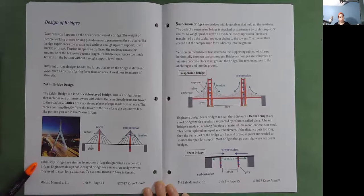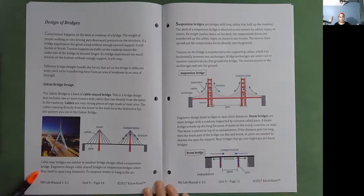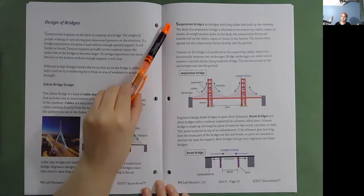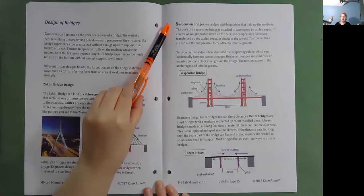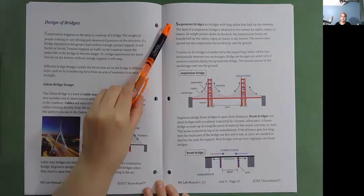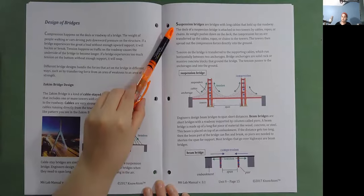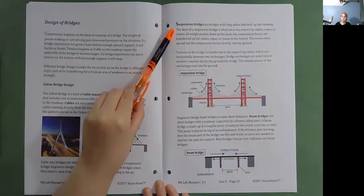Cable stayed bridges are similar to another bridge design called a suspension bridge. Engineers design cable stayed bridges or suspension bridges when they need to span long distances. To suspend means to hang in the air. Suspension bridges are bridges with long cables that hold up the roadway. The deck of the suspension bridge is attached to two towers by cables, ropes, or chains.